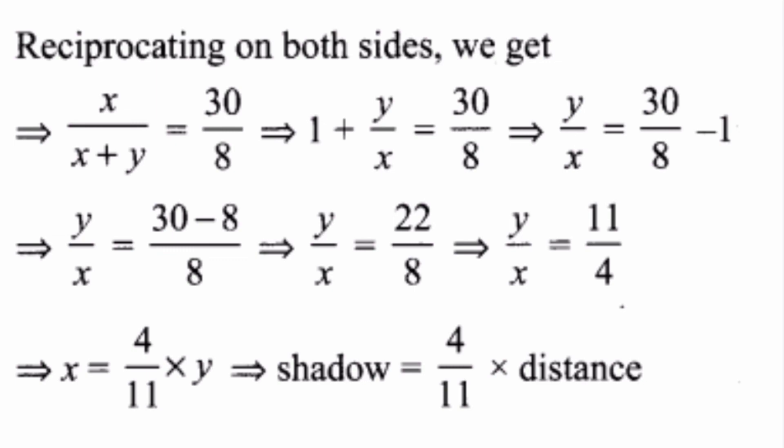This implies x equals 4 by 11 times y. That shows the relation between the length of the shadow and the distance. The length of the shadow is equal to 4 by 11 times the distance of the emu from the pillar.